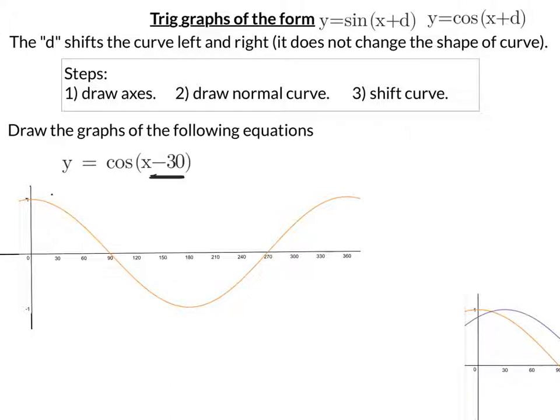Where it used to have its x intercept at 90, that's now 30 along. So that's 120. Where it used to have its other intercept at 270, that's now 300. Where it had its minimum point, 180, that's now 30 along. That's 210.